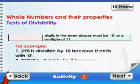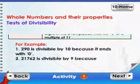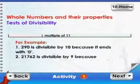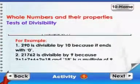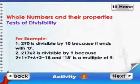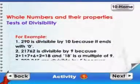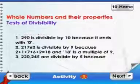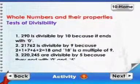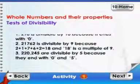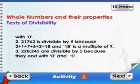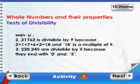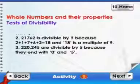For example, 290 is divisible by 10 because it ends with 0. 21,762 is divisible by 9 because 2 plus 1 plus 7 plus 6 plus 2 is equal to 18 and 18 is a multiple of 9. 2,20,245 are divisible by 5 because they end with 0 and 5.